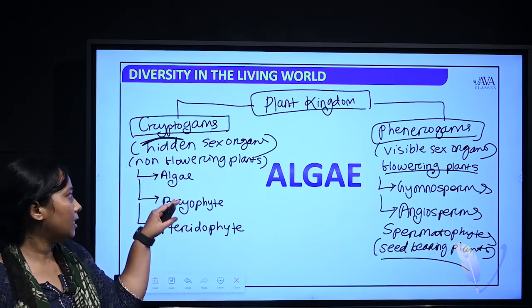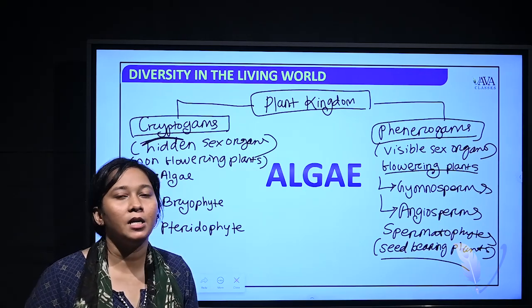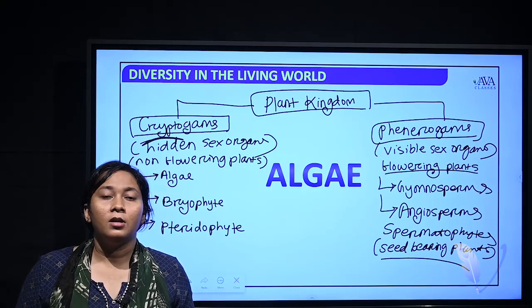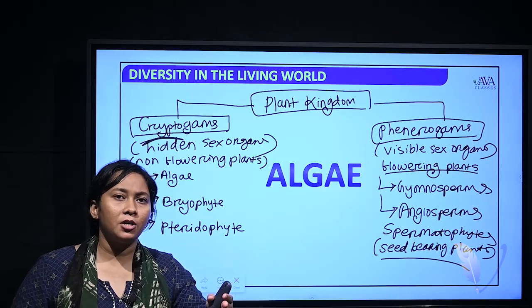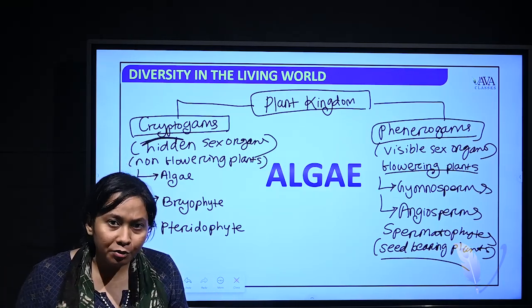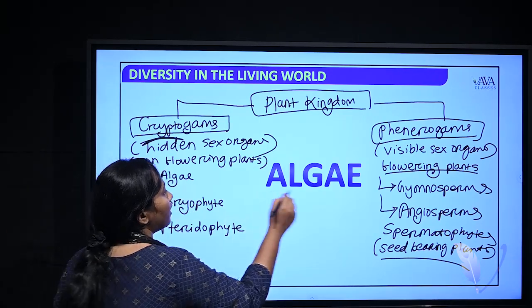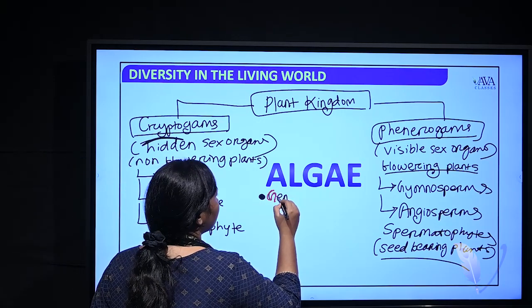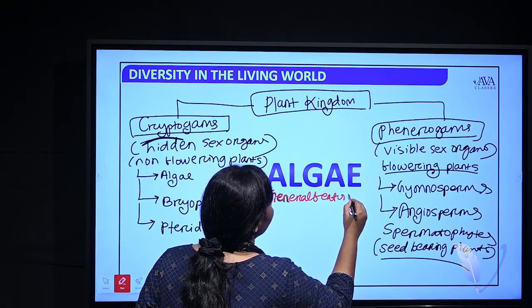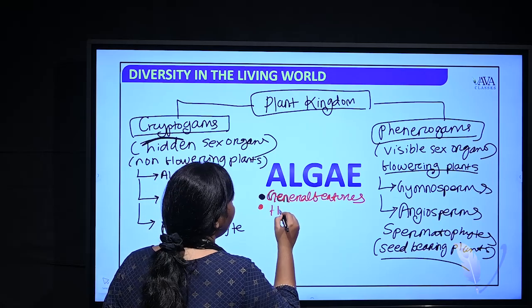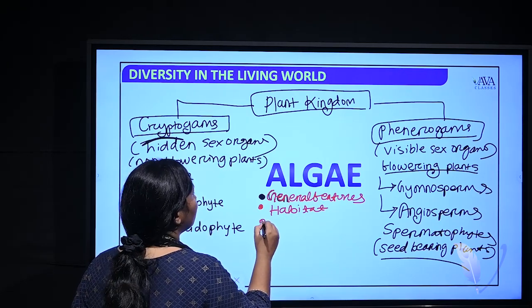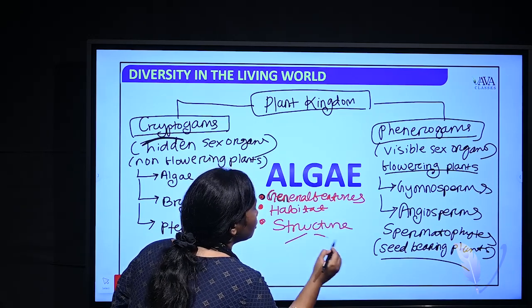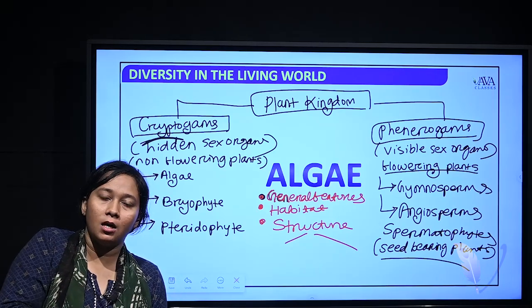We will now study the first group: algae. We will sequentially study their general features, habitat, and structure. In structure, we will study two types: external structure (morphology) and internal structure (anatomy).